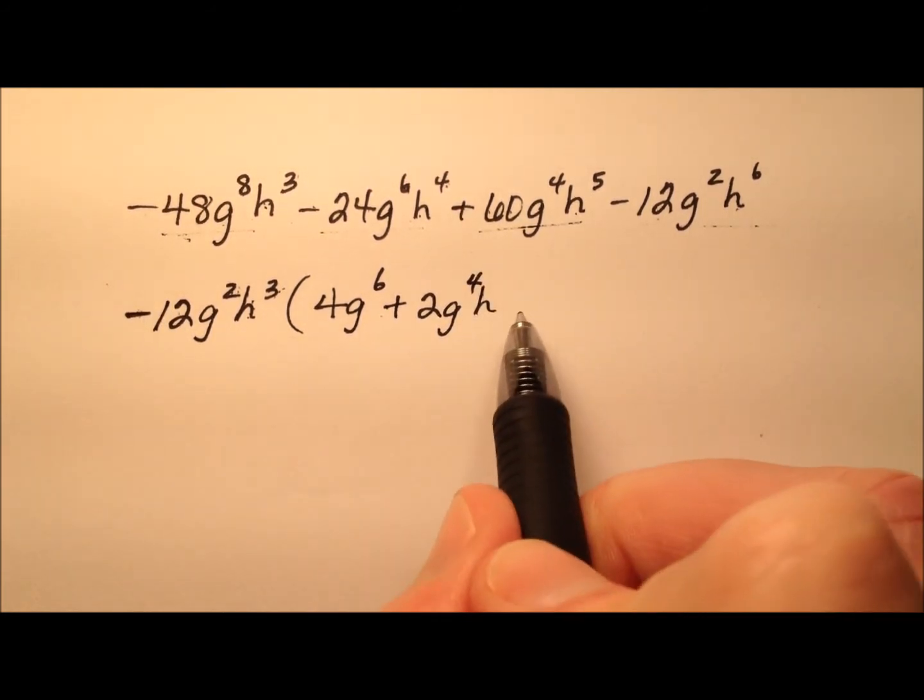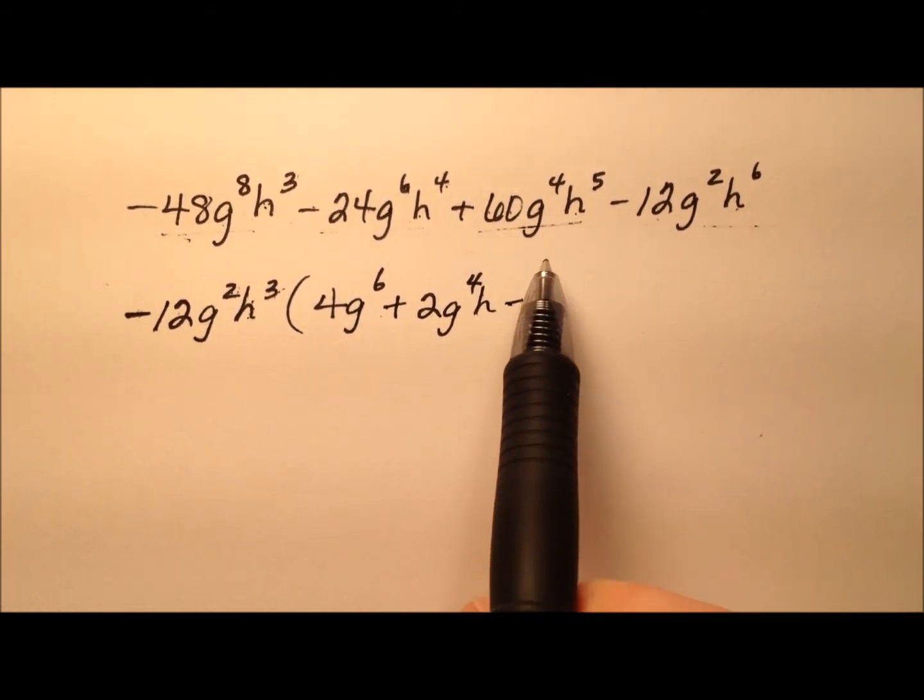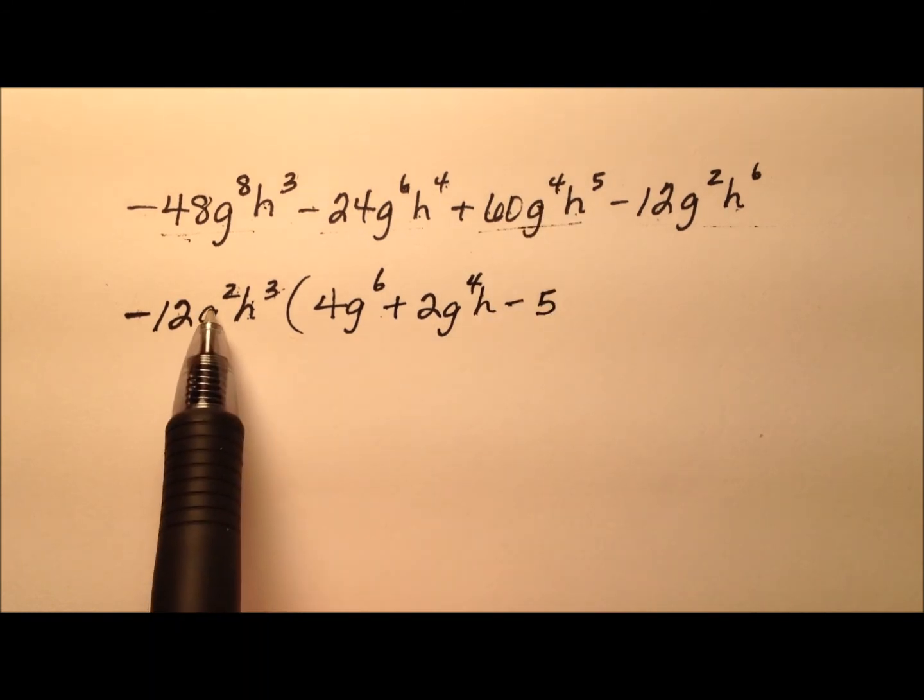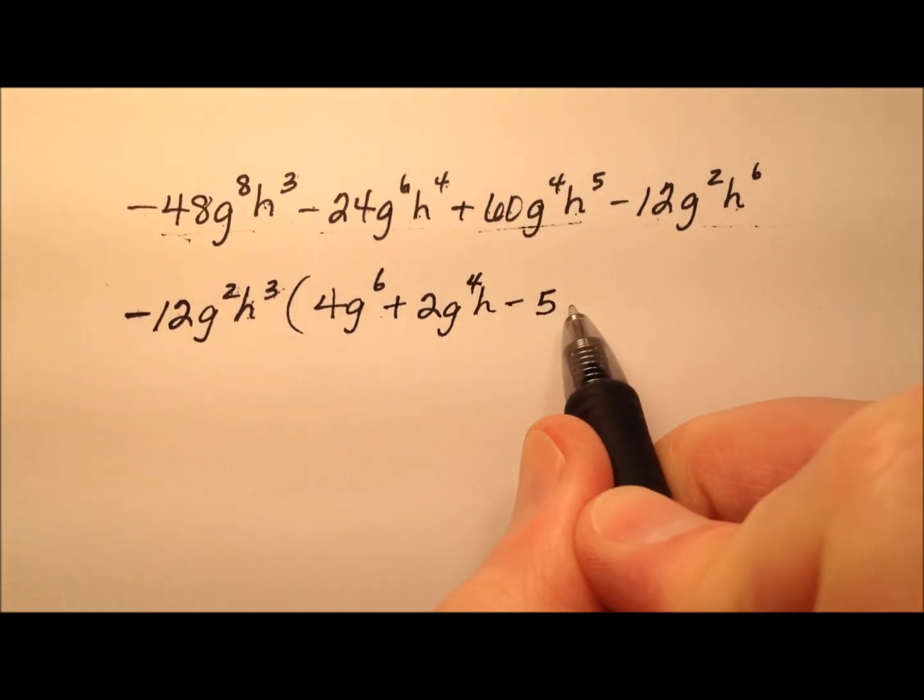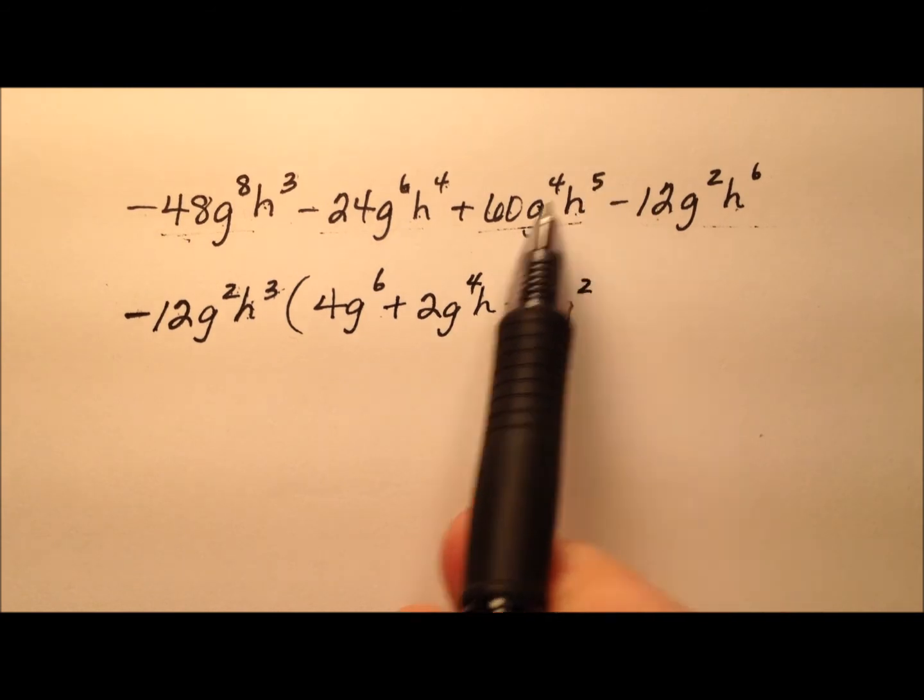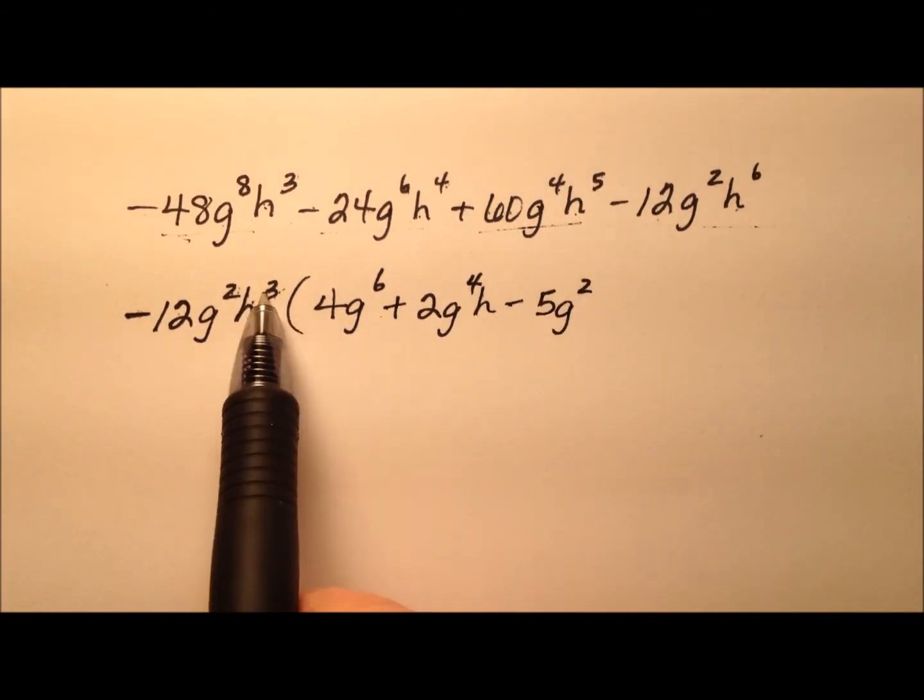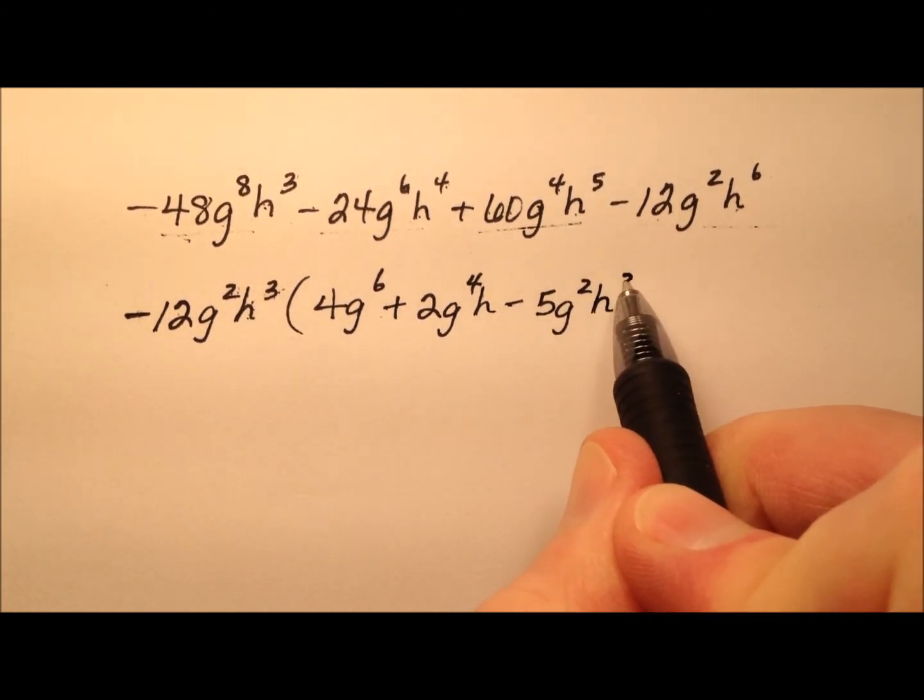Positive 60 divided by negative 12 will be negative 5. G to the fourth divided by g squared, 4 minus 2 is 2. And h to the fifth divided by h cubed is 5 minus 3, so h squared.